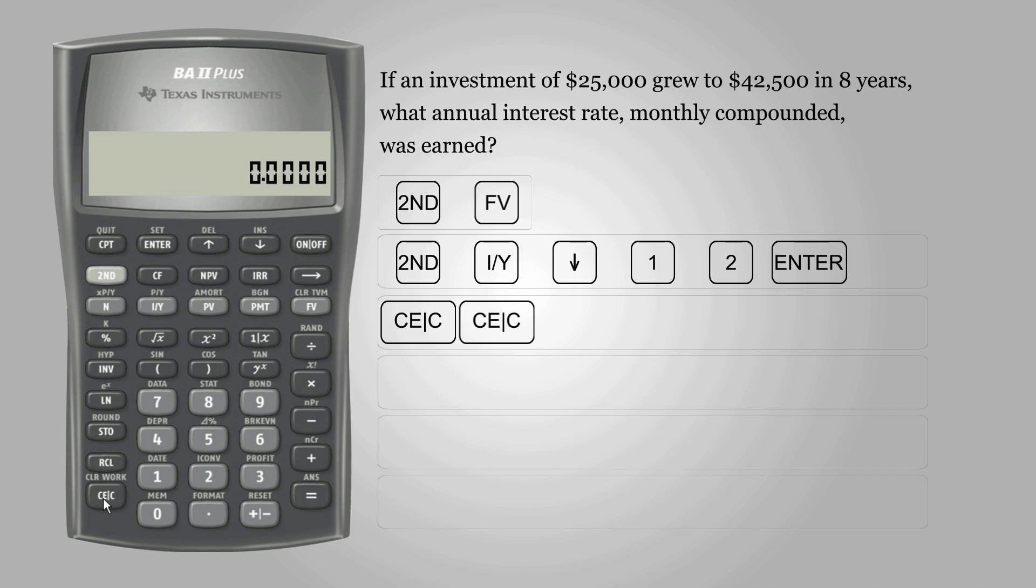Number of years is 8, so enter 8 and press N for number of periods. The calculator automatically multiplies the number of years to the CY value entered in the previous step.